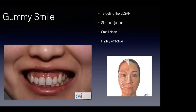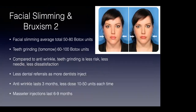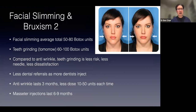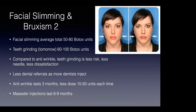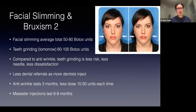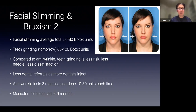Q&A: A dentist asked whether the doses mentioned are per side or in total. Dr. Ben Chan clarified: for grinding, it's about 30 to 50 units per side, so 60 to 100 units in total. Regarding pricing, Botox costs approximately $5 to $6 per unit. If you use Dysport or Xeomin, they are much cheaper — roughly half the price — while you can still charge the same to the patient, increasing your margin.